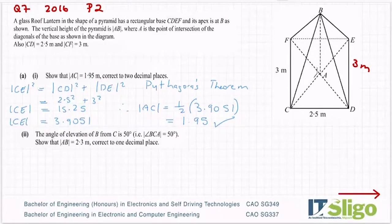So the angle of elevation of B from C, so angle of elevation is you're looking up, so you're looking up towards B. The angle of elevation of B from C is 50 degrees, i.e. the angle BCA is 50. So BCA, this angle here, is 50 degrees. And an angle looking down is, of course, an angle of depression. So 50 degrees there.